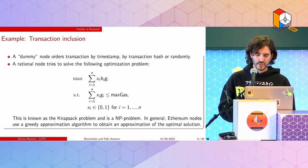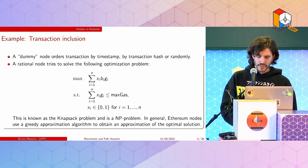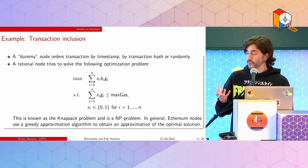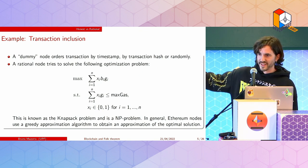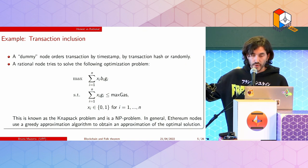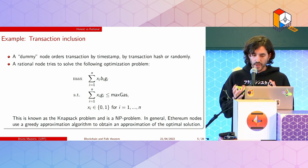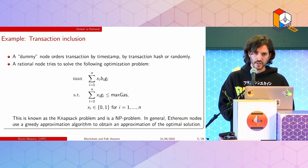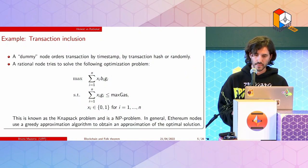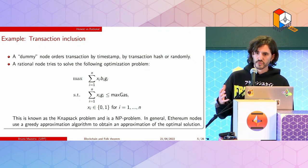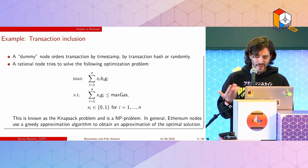A non-rational node would pick random transactions by timestamp or transaction hash, but a rational node tries to solve this optimization problem. This is also known as the knapsack problem, which is well known to be NP-hard with no efficient solution. However, nodes are coded to solve this problem well using a greedy approximation algorithm, so we assume that nodes are more or less rational.